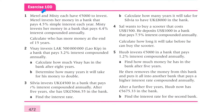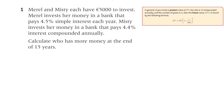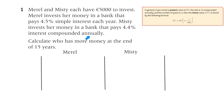Let's have a look at exercise 10D, starting with number one. Merle and Misty each have 5,000 euro to invest. Merle invests her money in a bank that pays 4.5% simple interest, and Misty invests her money in a bank that pays 4.4% interest compounded annually. Calculate who has more money at the end of 15 years.